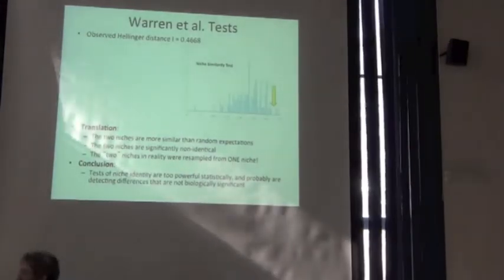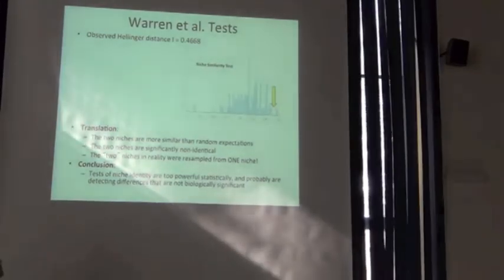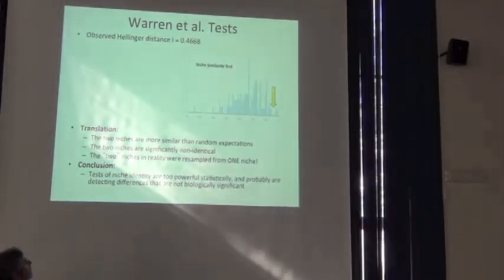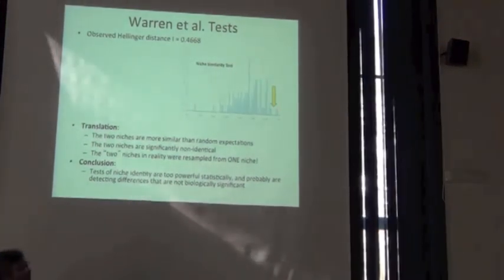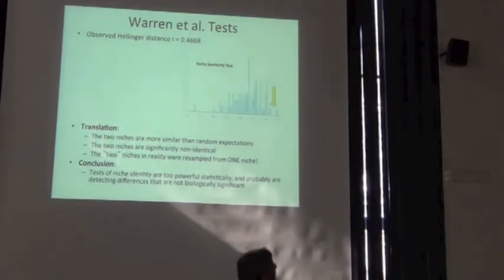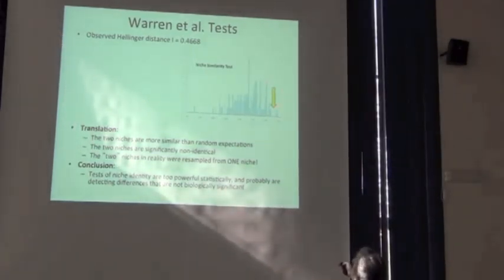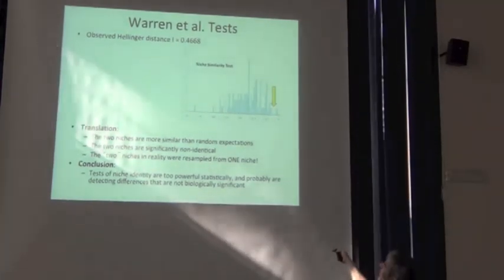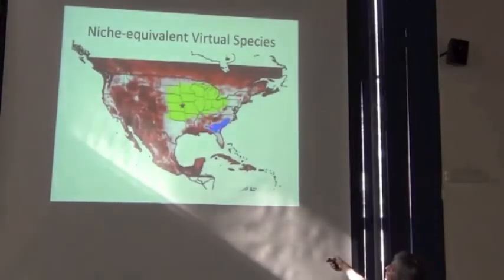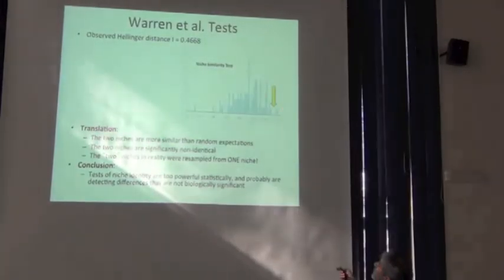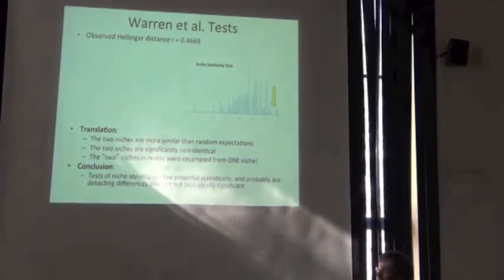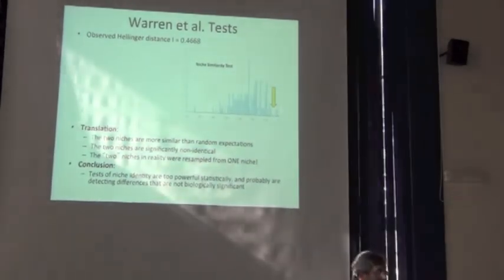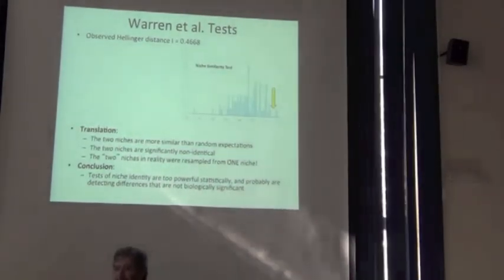So I'm going to use a niche similarity test. I'm not going to go into the details of this. We can get you copies of the Warren et al. paper so you have this in your literature store. But essentially what we do is we, in both of these, we generate a null distribution of similarity if there were no special relationship between the two niches. And then we look at the observed. And so this is similarity from low to high. And so in a niche similarity test, what we see is that those two, the niches associated with those two distributions, the observed is quite high relative to the distribution. And so we have evidence for what we would call significant or surprising niche similarity. So they're similar. They're more similar than you would expect by chance.